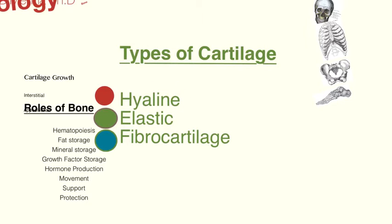Let's begin with hyaline cartilage. Hyaline cartilage is the most abundant type — it's everywhere. It's in everything from articular joints to the respiratory system, actually forming components of the larynx, trachea, and bronchioles. Some of the nose is in it as well, and key components of the ribs. It's very flexible but also very resilient, and it contains only collagen fiber.